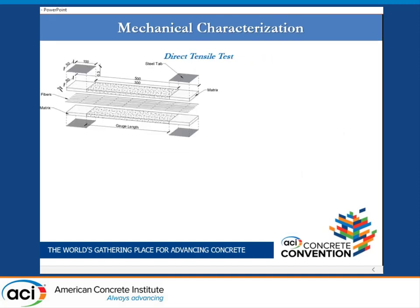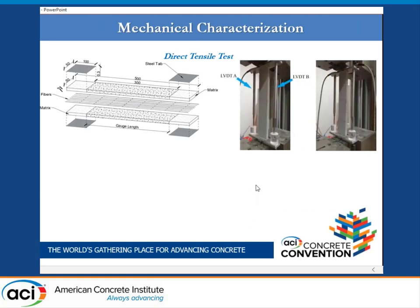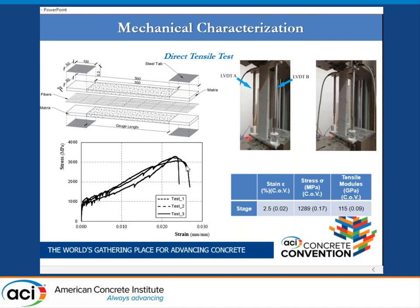The second phase tested the full FRCM system — matrix plus PBO fiber — by a tensile test. The test setup is reported in the figure. On each side of each specimen, two LVDTs labeled A and B were installed in order to evaluate the vertical displacement. The curves are reported in terms of stress versus strain. It is possible to divide the curves into at least two phases, with the ultimate phase results reported in the table on the right, in terms of strain, stress, and tensile modulus.